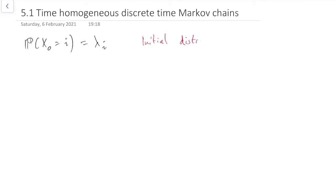And then we're also interested in the transition probabilities. So the transition probabilities are the probabilities that we go from one state i to another state j.